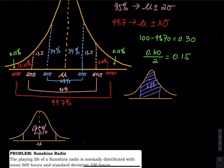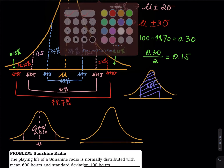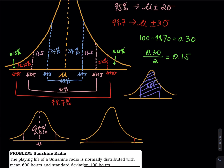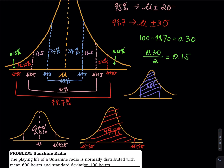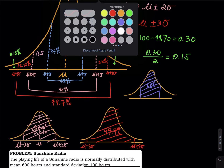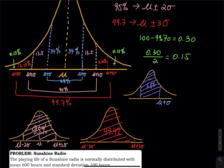For 99.7%, you draw another bell curve and take three steps to the left and three steps to the right. When handwriting it's hard to make the graph perfectly symmetrical — a textbook picture is clearer. The labels are: mu ± 3σ for 99.7%, mu ± 2σ for 95%, and mu ± σ for 68%. That's how the empirical rule works.